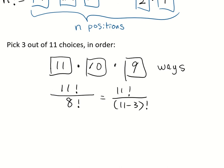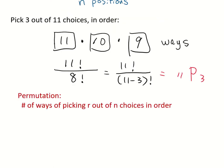This is the permutation of choosing 3 out of 11 choices with order matters. So a permutation is used to count the number of ways of picking r objects out of n choices and put them in order. And we write it as nPr. And to calculate this, we will use n factorial divided by n minus r factorial.